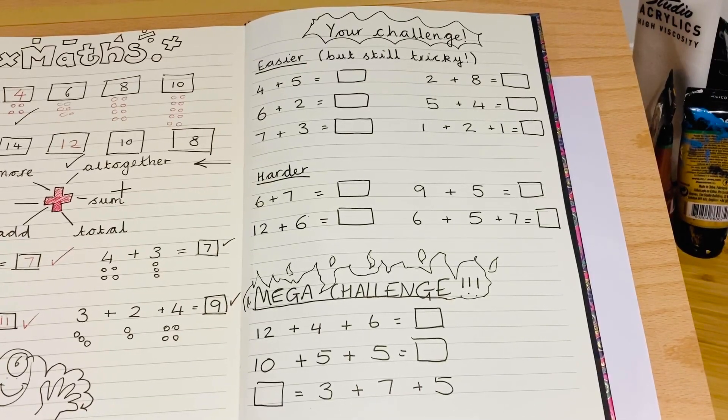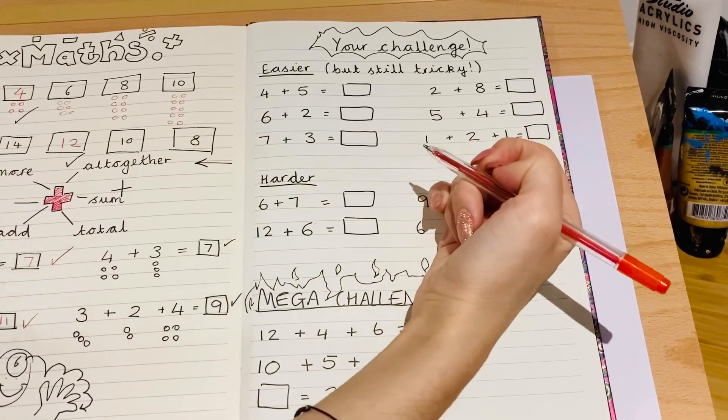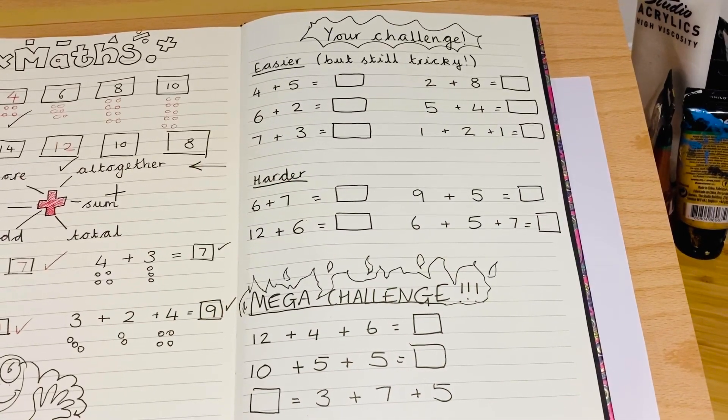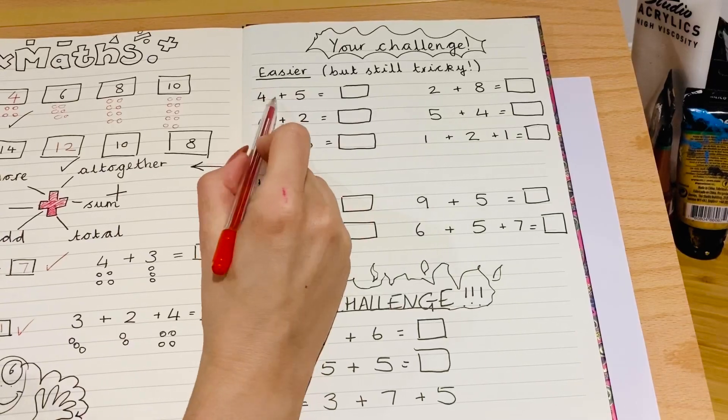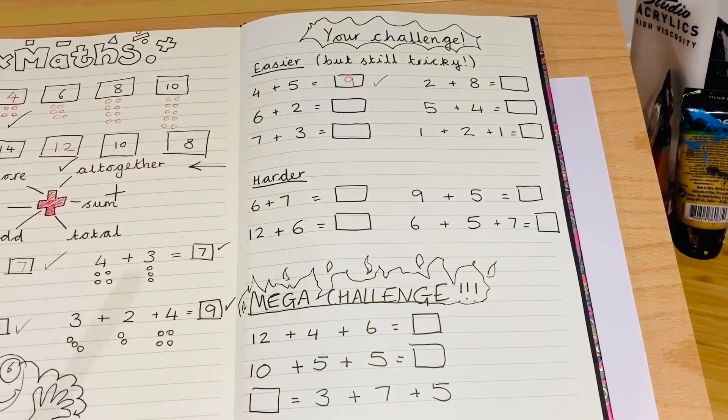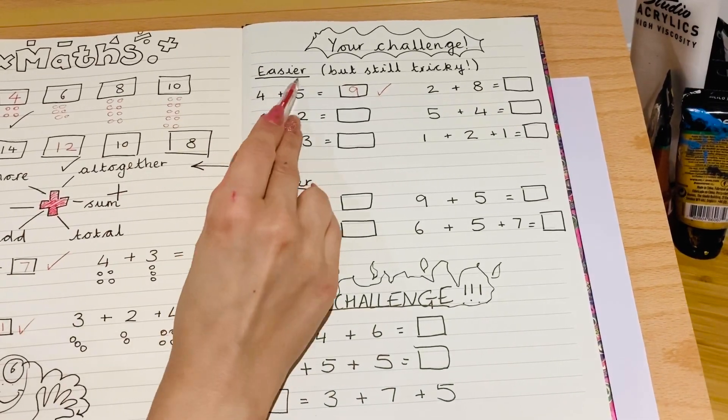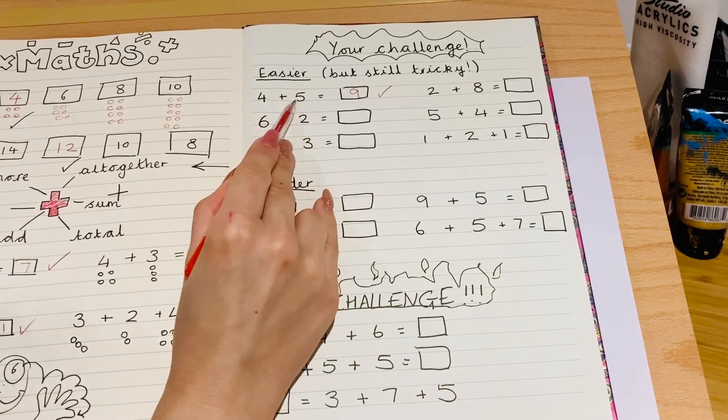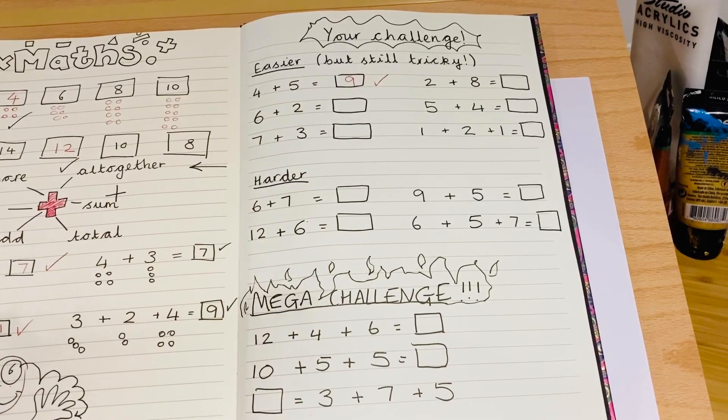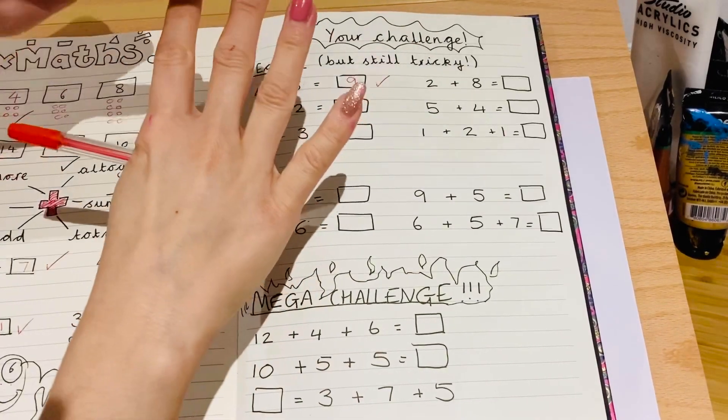So I'm going to mark through these ones now if you've had a chance to go. So this is your last chance to pause the video if you haven't already solved these questions. So the first one, four plus five is nine. Give yourself a tick if you found that one. You could draw the circles or you could count on or use your fingers. Remember if you are counting on, always start from the largest number because it just makes it a lot easier. So get five in your head and then count on four more. Five, six, seven, eight, nine.